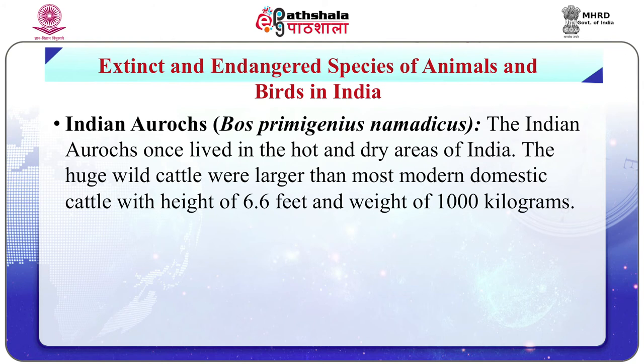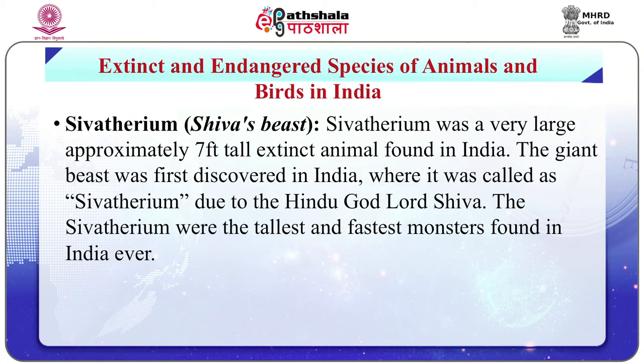The Indian aurochs once lived in the hot and dry areas of India. These huge wild cattle were larger than most modern domestic cattle, with a height of 6.6 feet and weight of 1,000 kg. Sivathram, also known as Shiva's beast, was a very large — approximately 7 feet tall — extinct animal found in India. First discovered in India and named after the Hindu god Lord Shiva, the Sivathram were the tallest and fastest monsters found in India.